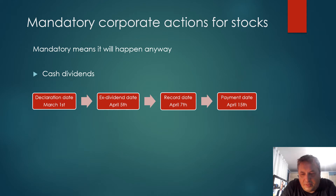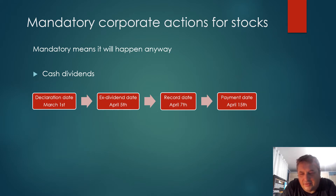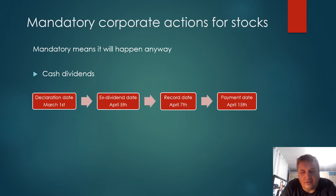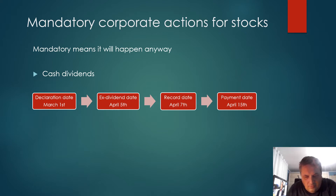How does a cash dividend work? In the United States, dividend-paying companies basically pay dividends every quarter. Of course, there are lots of companies that don't pay dividends. There's a declaration date when the board of directors declares a dividend — they have to declare it every time. It's not required by law to pay a dividend, at least not in the United States, but the board of directors may still choose to declare one.